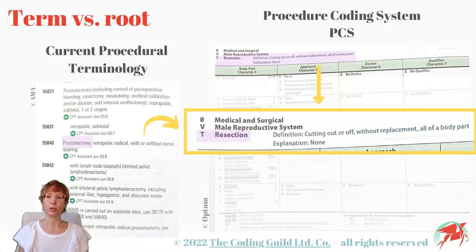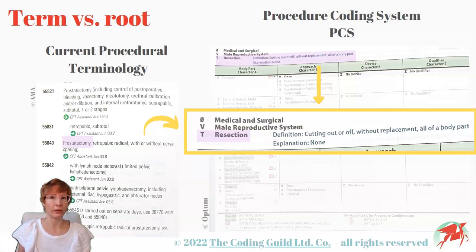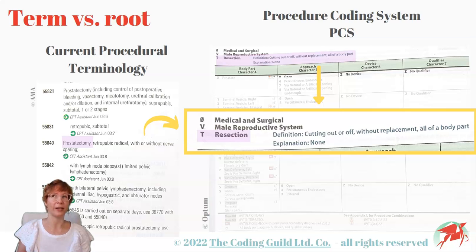So when CPT uses the medical term prostatectomy, PCS asks: sure, but what does that mean? What is happening to the prostate? And the answer is it's getting resected — it is being cut out or off without replacement. As you can tell, the logic behind the two systems and the way you have to use the book is very different and usually takes a little time to adjust to.